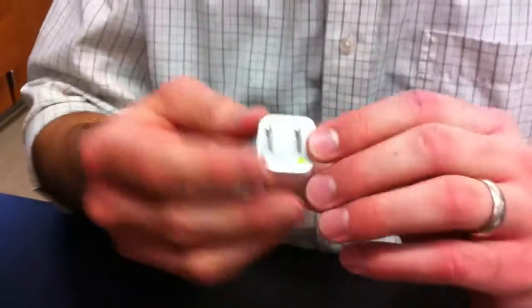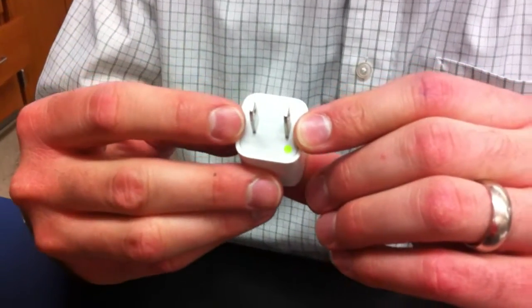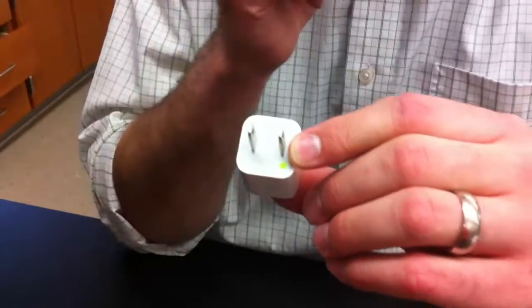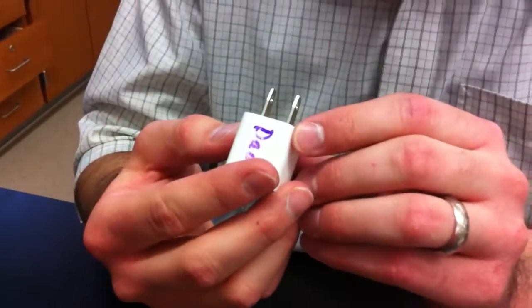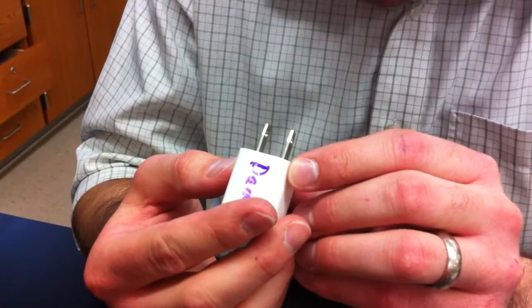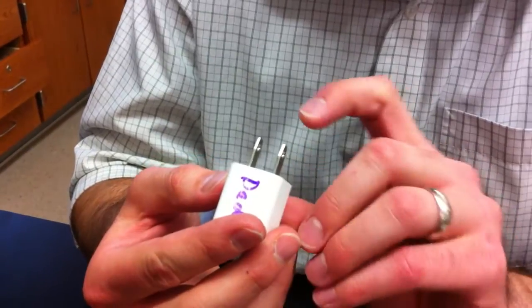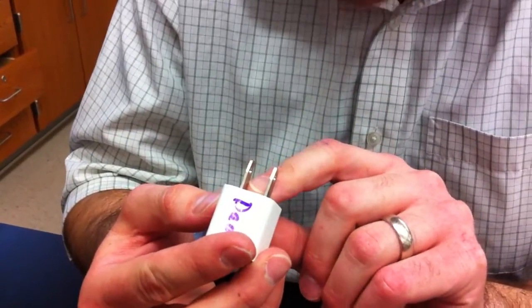And you notice that all it has is the plugs on the end. But if you look at the label, what does it say? It says it can take in 120 volts. So if you plug it into your wall, you get 120 volts in. But it actually only outputs 5 volts.